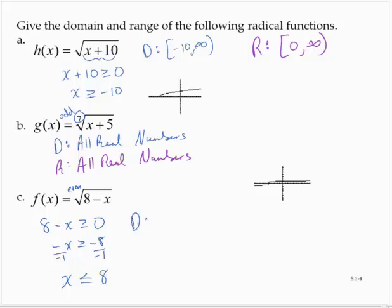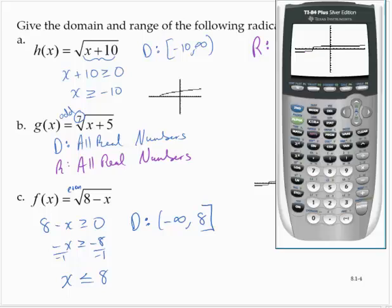So then the domain is negative infinity comma 8 bracket. And if we take a look at that graph, clear that out. The square root of 8 minus x. Close it off. Graph it.